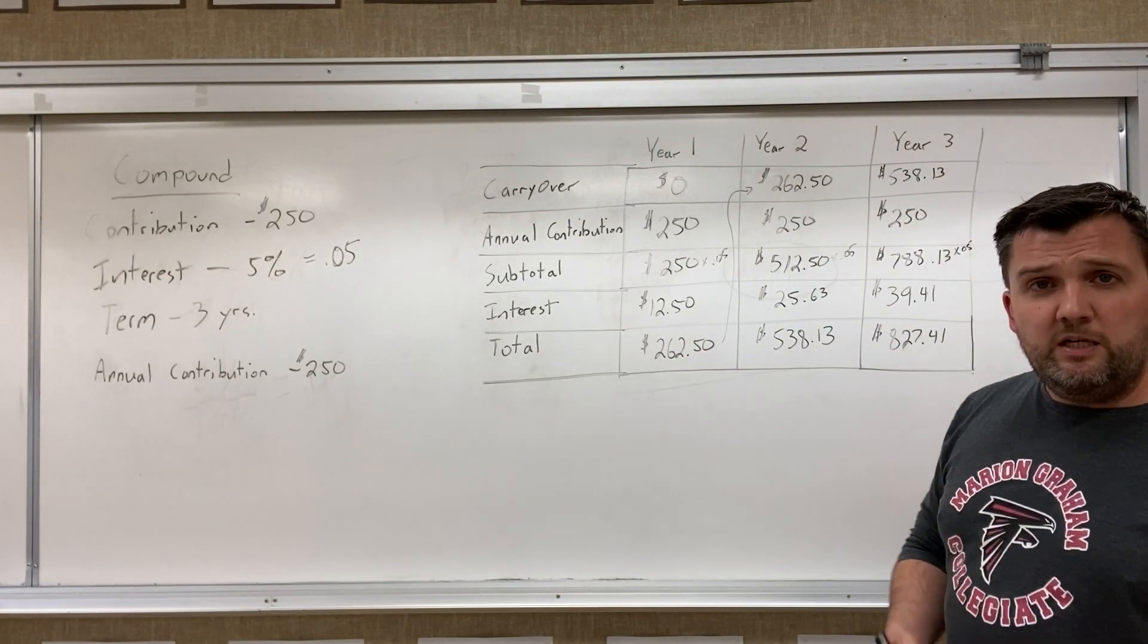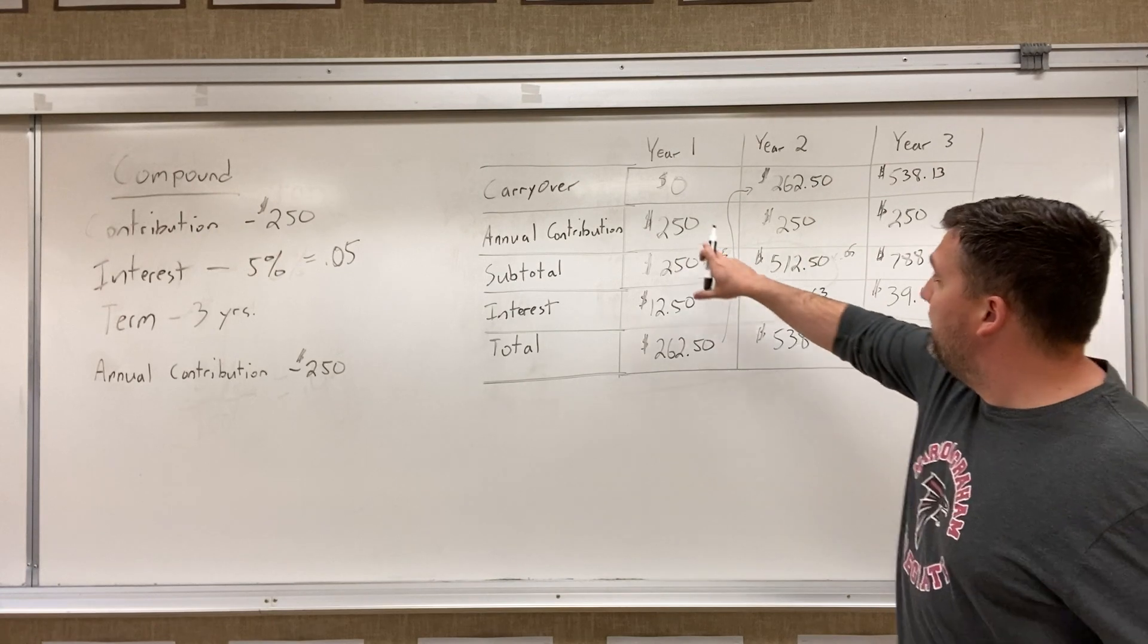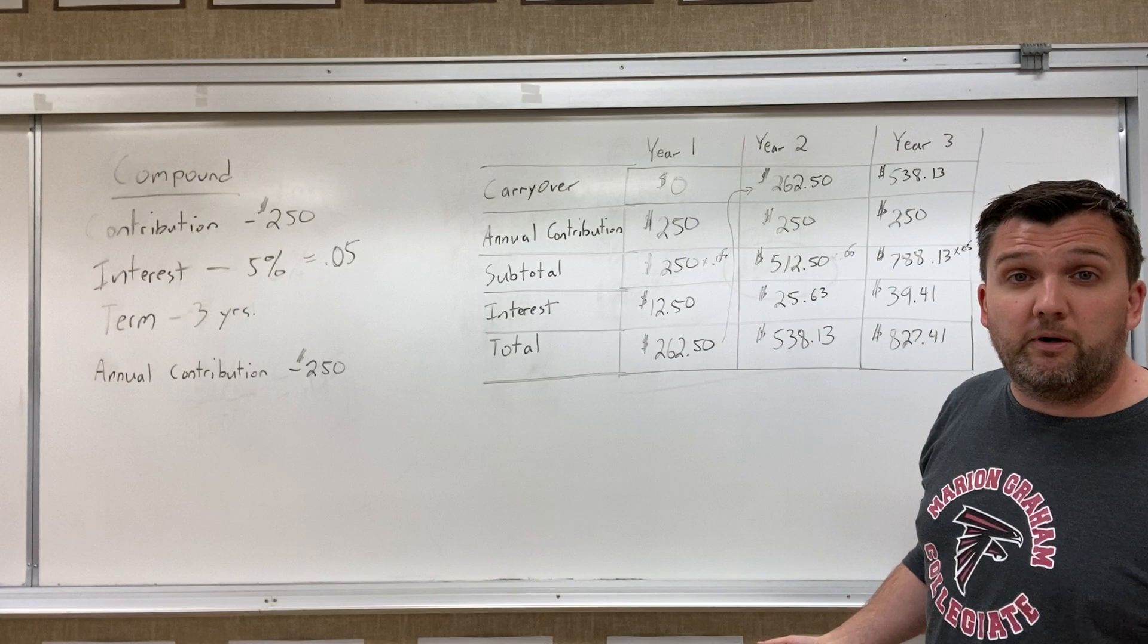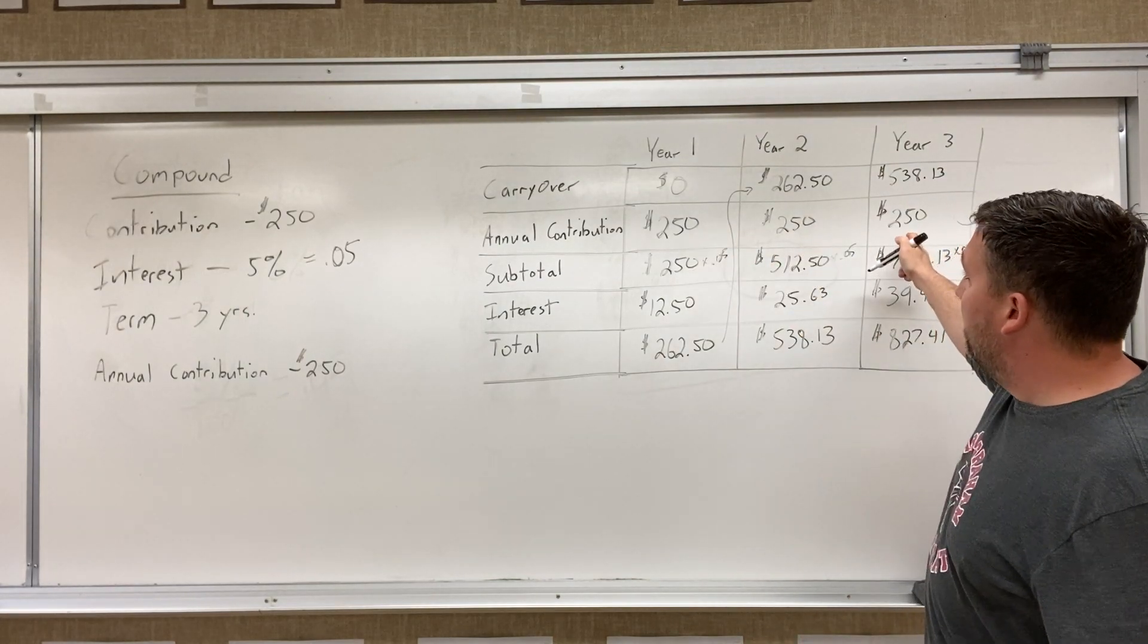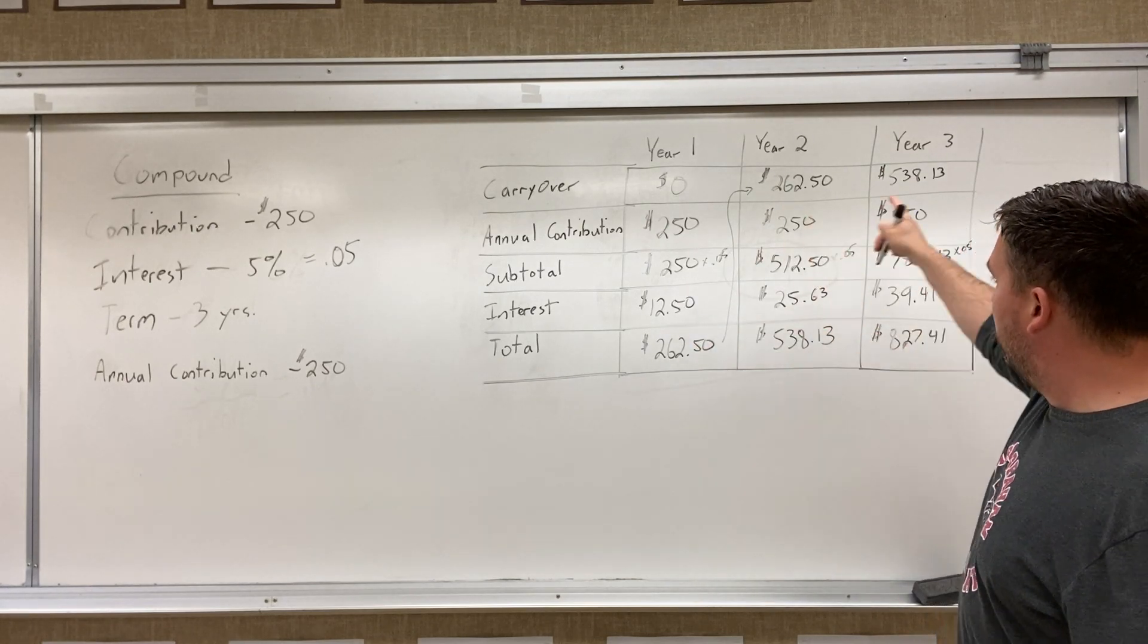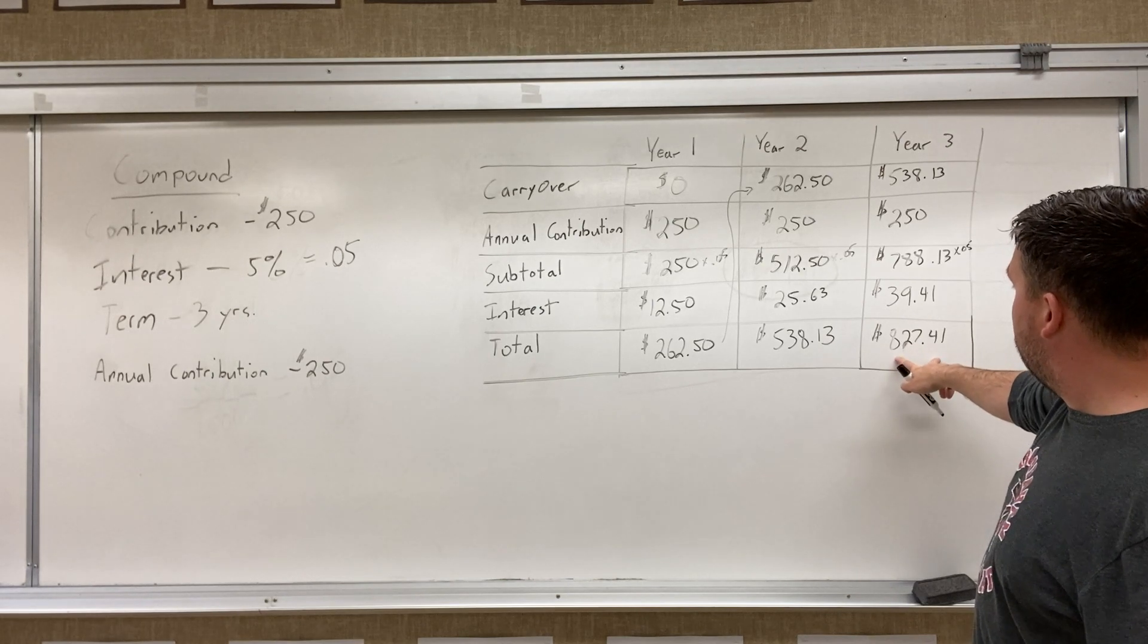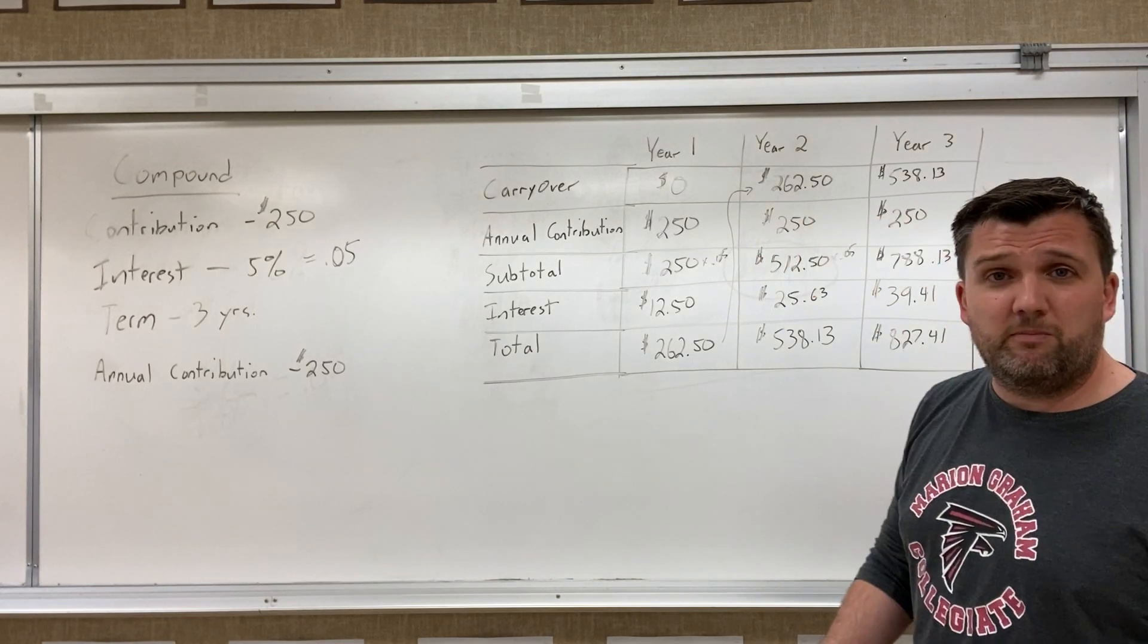So you can see the big advantage of doing compound interest is when you keep adding money into it. Yeah, I know you keep adding more, and that's what makes it look like it's a really big number. But you've invested $750 as a total investment, but because you've got to compound all the interest along the way, you just ended up making $77.41 for three years, and all you had to do is keep adding a little bit of money.